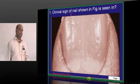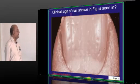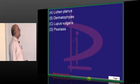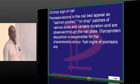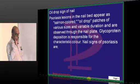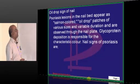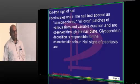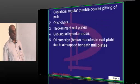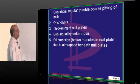What is this clinical sign? It is typically called the oil drop sign — the oil drop sign of the nail — which is typically seen in psoriasis. This is what you need to remember.